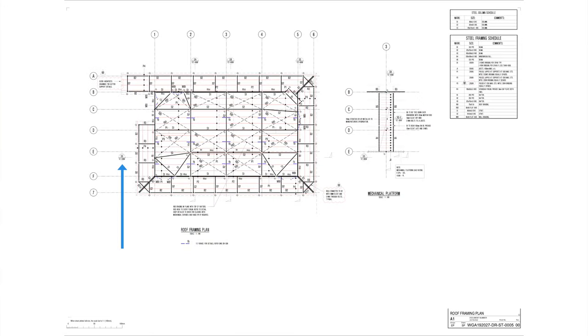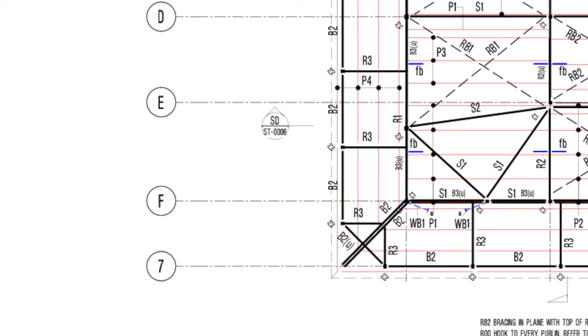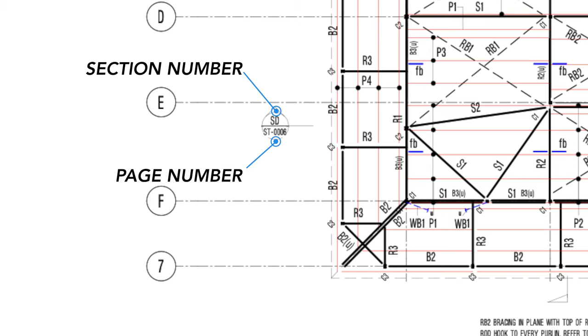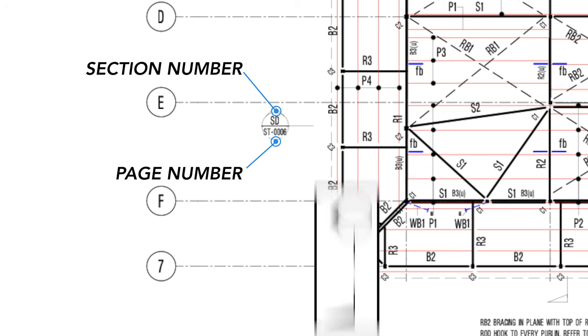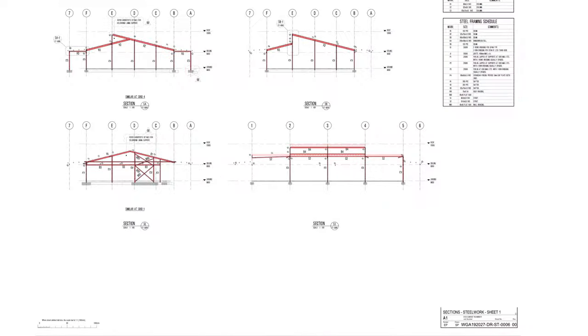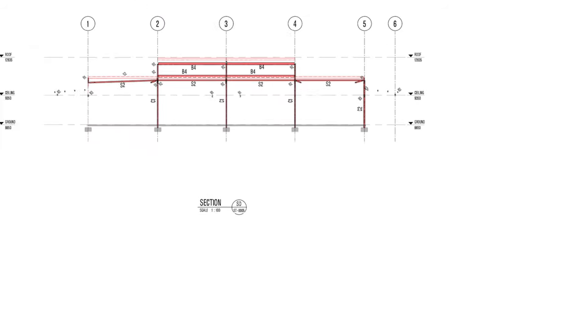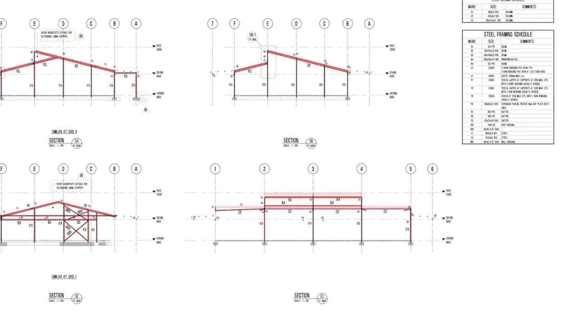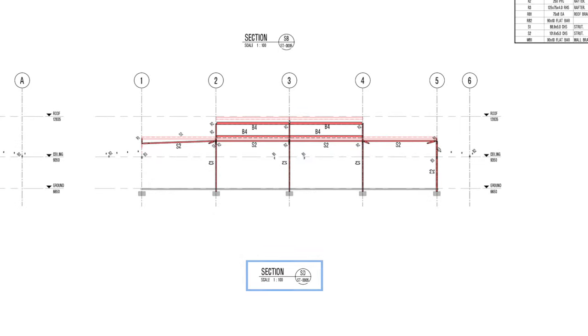Next is the referencing system, which is essentially created to keep track of where things come from within the larger structure. The way this works is through the information given in the head of the section marker reference symbol — basically a little circle split into two halves. The top half indicates the section number and the bottom half indicates the page number the section is drawn on. If the section is on the same page, the bottom half will show a hyphen. To find a section on a different page, go to the page indicated in the bottom half and read through the individual title blocks until you find the title matching the section number in the top half.